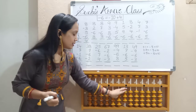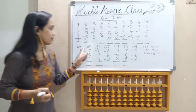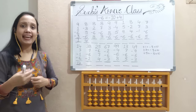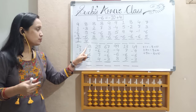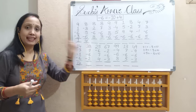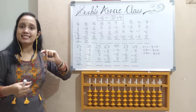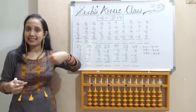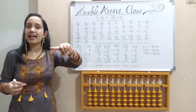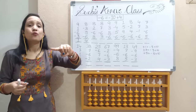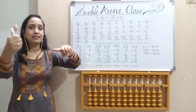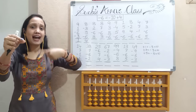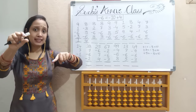Zoom your abacus. Double digit: 30, 8. 10's place is 30. 1's place is 8 — 5 and 3 pinching. At a time, 38.